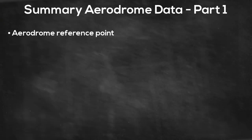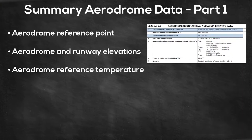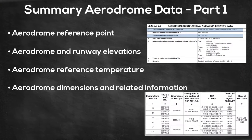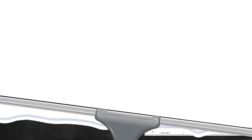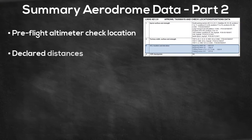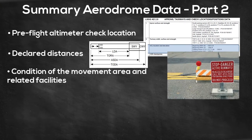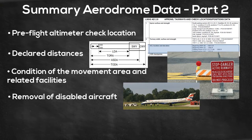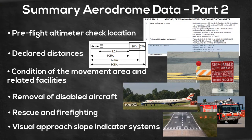As a conclusion, the aerodrome data consists of the following elements: the aerodrome reference point, aerodrome and runway elevations, aerodrome reference temperature, aerodrome dimensions and related information, strength of pavement, preflight altimeter check locations, declared distances, condition of the movement area and related facilities, a plan for the removal of disabled aircraft, rescue and firefighting services, and the visual approach slope indicator systems.